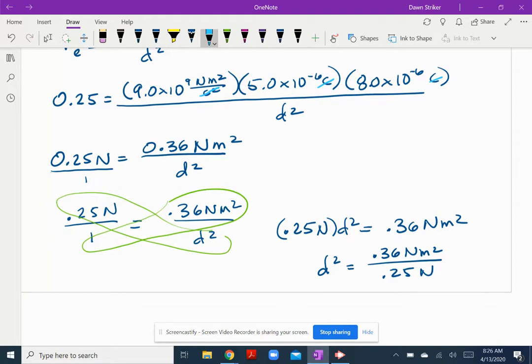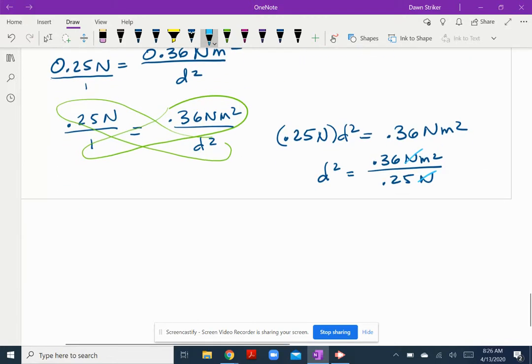And look at those units. I love it when the units work out that way. Okay. So I'm going to get a number that has a unit of meters squared, and that makes total sense to me. And so 0.36 divided by 0.25 gives me 1.44. So D squared is equal to 1.44 meters squared. And the last step is to take the square root. And so I get D is equal to 1.2 meters.